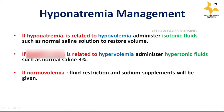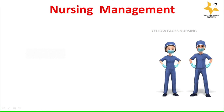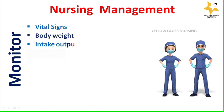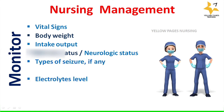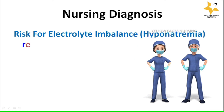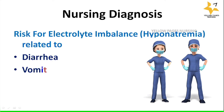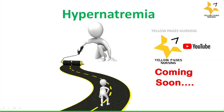The antidiuretic hormone arginine vasopressin also helps in stimulating free water excretion. Nursing management of hyponatremia includes monitoring vital signs, body weight, intake and output, mental status, neurologic status, types of seizures if any, skin turgor, electrolyte levels, central venous pressure, and oral mucosa. The main nursing diagnosis is risk for electrolyte imbalance related to diarrhea, vomiting, and excessive sweating.